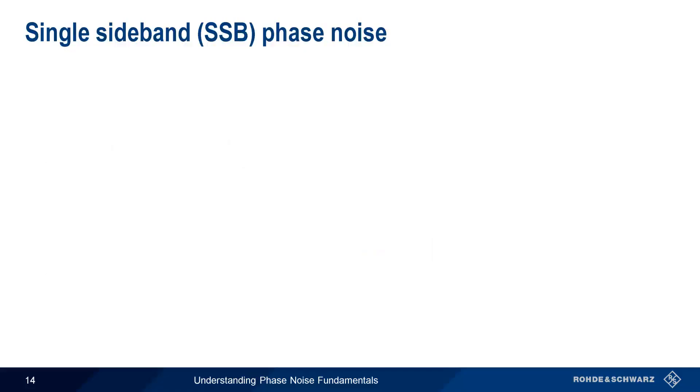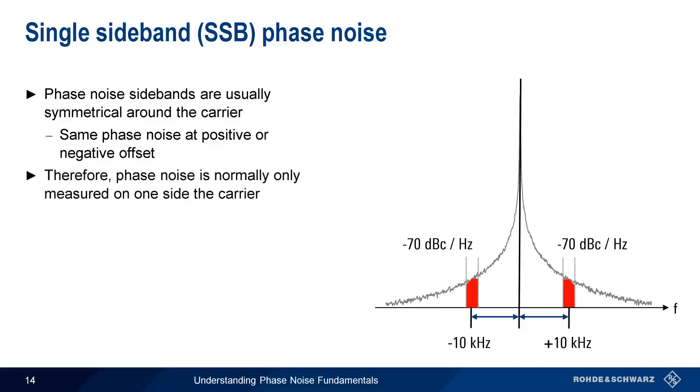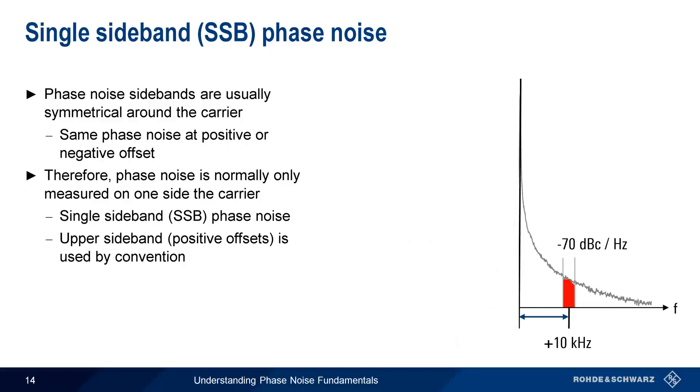In the example we just looked at, phase noise was measured at a positive frequency offset from the carrier. Since the sidebands created by phase noise are usually symmetrical around the carrier, the measured phase noise will be the same for a given positive and negative offset from the carrier. Here, phase noise is minus 70 dBc per hertz, at both plus 10 kHz and minus 10 kHz offsets. Therefore, phase noise is normally only measured on one side of the carrier, and this is called single sideband phase noise. By convention, positive offsets, or the upper sideband, is used when measuring and reporting phase noise.